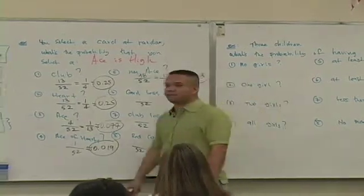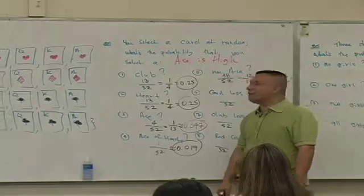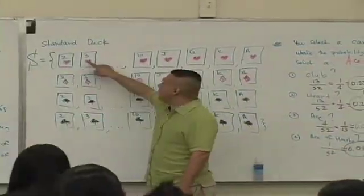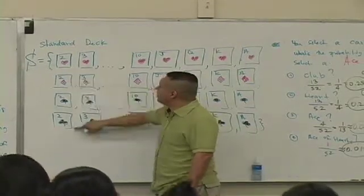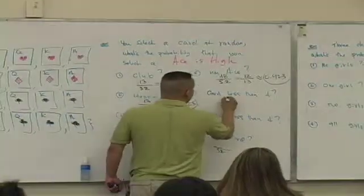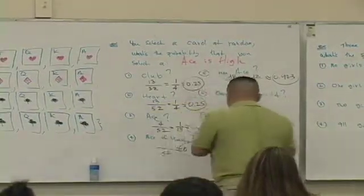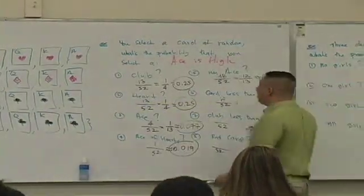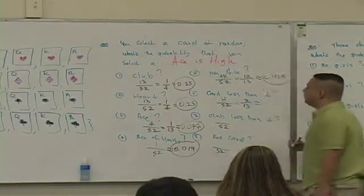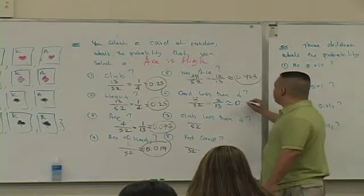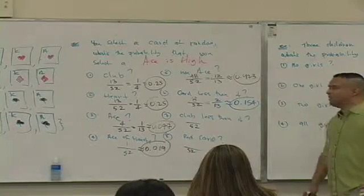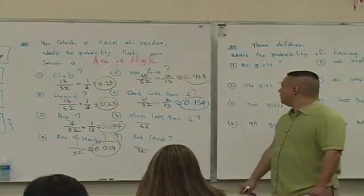Card less than a four. What's less than four? The twos and the threes. The twos and the threes, how many are there? Two, four, six, eight. Eight over fifty-two, what does that reduce to? Four over twenty-six, two over thirteen, what is that approximately? Zero point one five four.